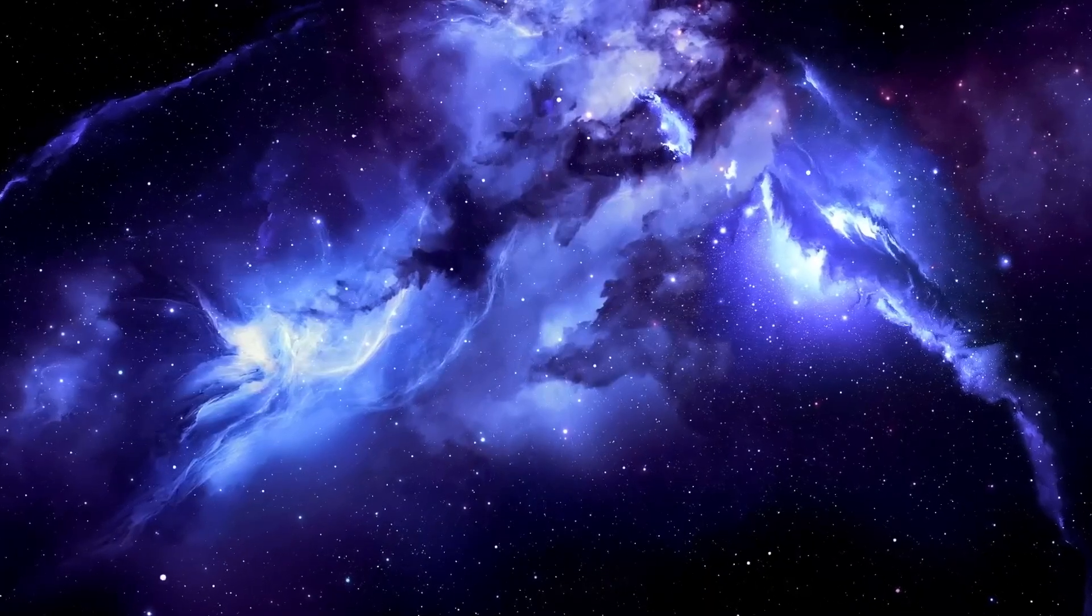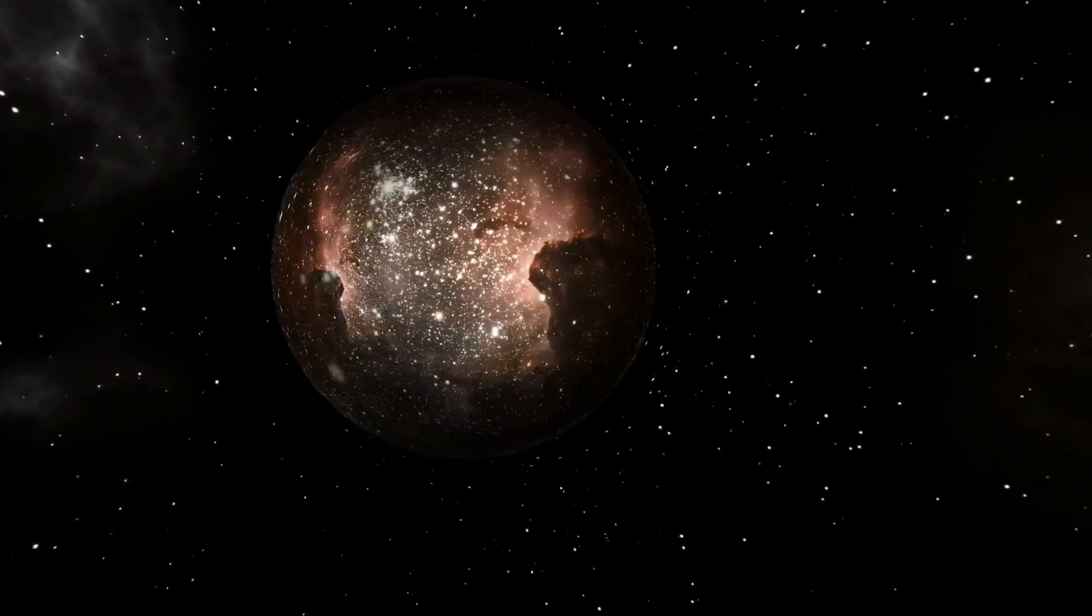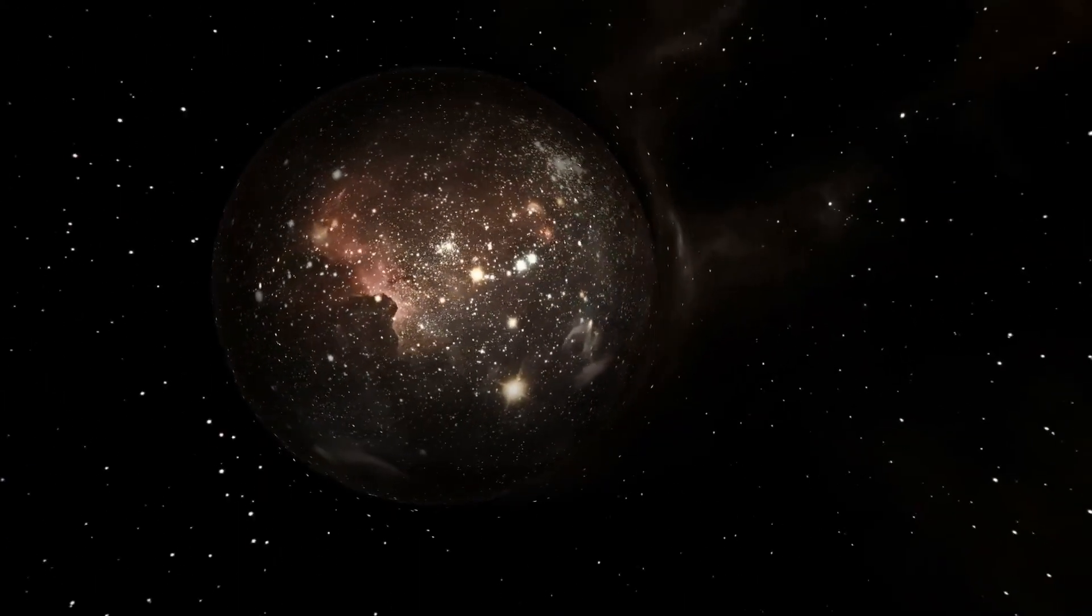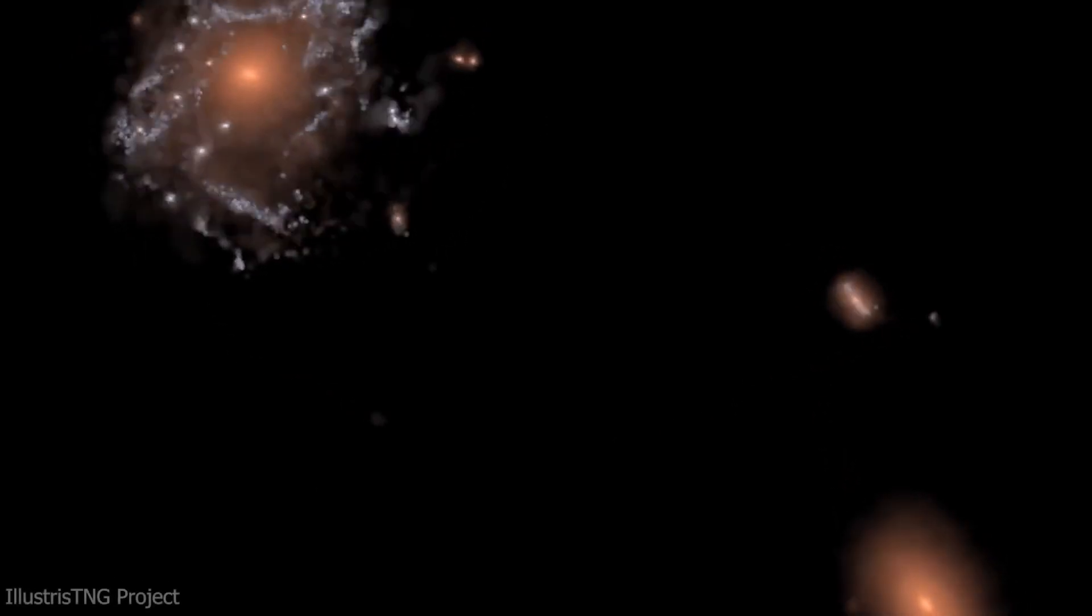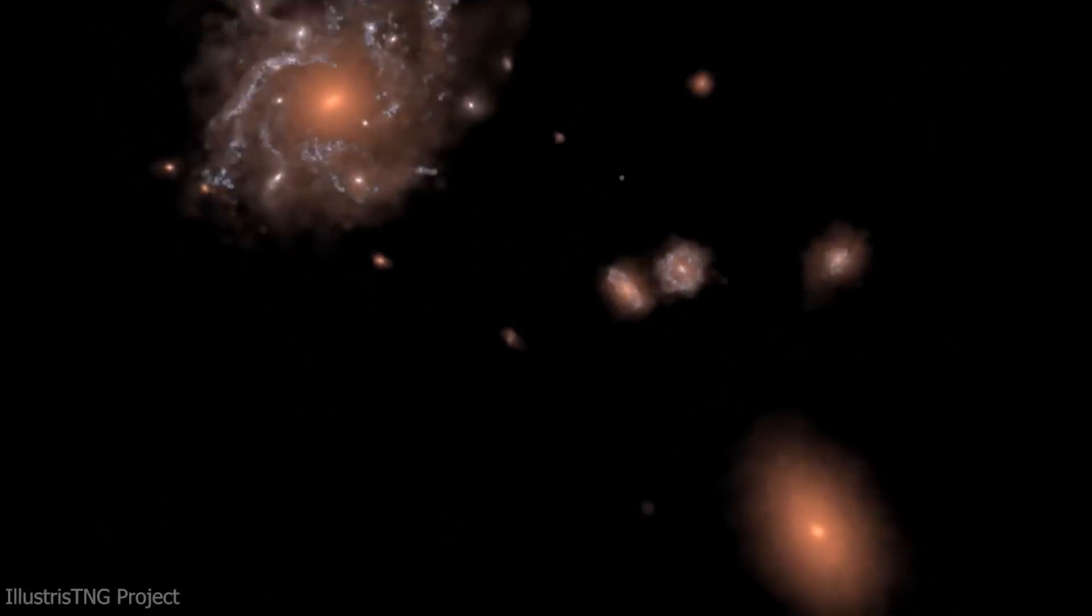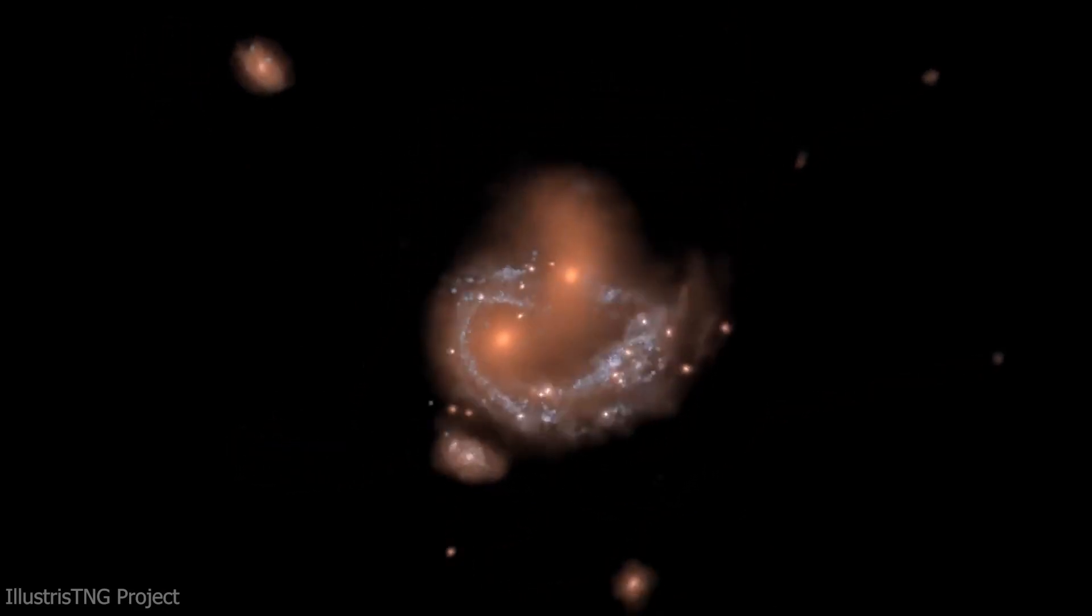In this era, the universe was a vast ocean of neutral atoms, primarily hydrogen and helium, floating in a sea of radiation and neutrinos. You might think that the formation of atoms would quickly lead to the creation of stars, but the universe is not one to rush its grand designs. It took millions of years for the first stars to form.